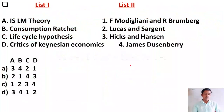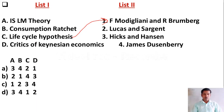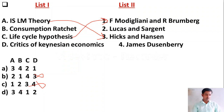Next, a match-the-following question: List 1 — ISLM theory, consumption ratchet, life cycle hypothesis, critics of Keynesian economics. List 2 — Modigliani and Bromberg, Lucas and Sargent, Hicks and Hansen, James Duesenberry. Life cycle hypothesis is given by Modigliani and his student Bromberg. ISLM theory is given by Hicks and Hansen. The right answer is Option D. ISLM is given by Hicks and Hansen; consumption ratchet is given by James Duesenberry; life cycle hypothesis by Modigliani; and critics of Keynesian economics are Lucas and Sargent.